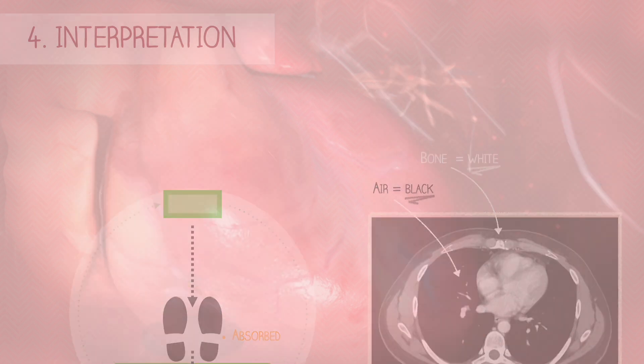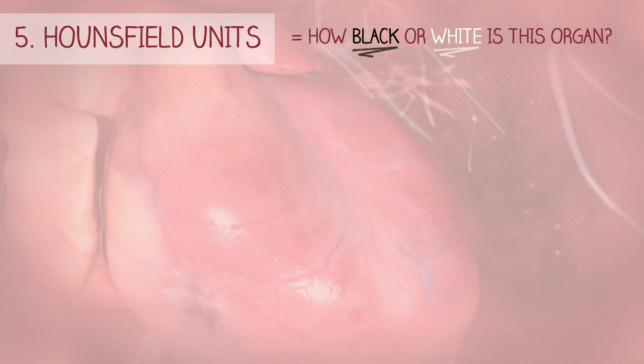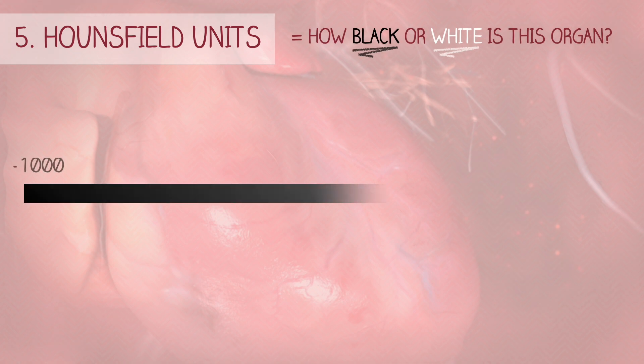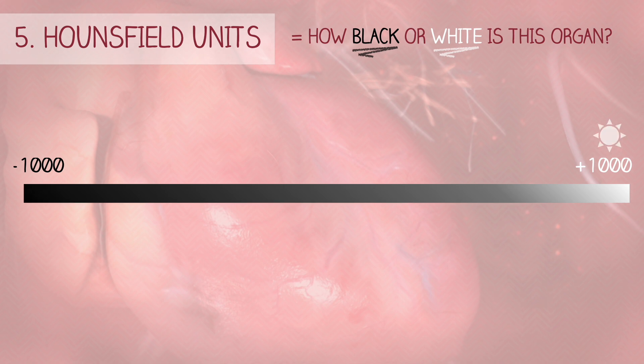The image's grayscale appearance can be quantified using a measure called Hounsfield units. This number tells you how black or white a structure appears — the higher the number, the brighter the organ. Think of it like a thermometer: the higher the temperature, the more the sun shines.